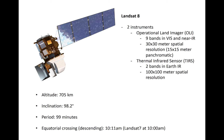OLI channels have a spatial resolution of 30 by 30 meters, or 15 by 15 meters in the panchromatic band. TERS data has a spatial resolution of 100 by 100 meters. The orbit is daytime descending with an equatorial crossing time shortly after 10 a.m.